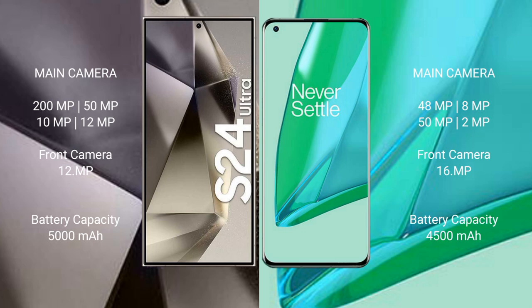Samsung Galaxy S24 Ultra has a 5000mAh battery with 45W fast charging support. OnePlus 9 Pro has a 4500mAh battery with 65W fast charging support.